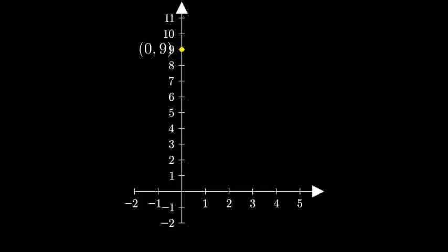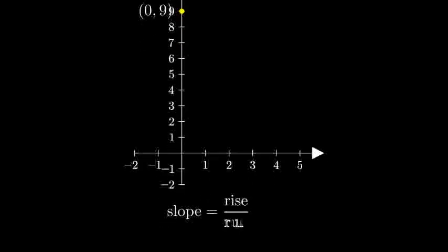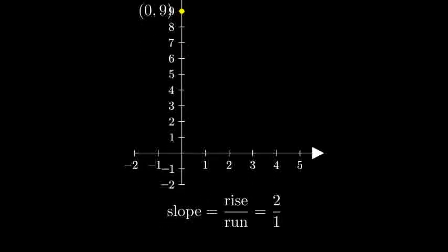Next, we'll use the slope to find another point. The slope is 2, which means rise over run is 2 over 1. From our y-intercept point, we'll go up 2 units and right 1 unit to find our next point. This gives us our second point (1, 11). Let's plot this point.